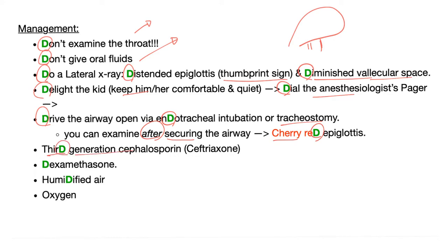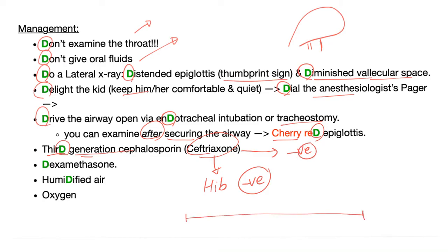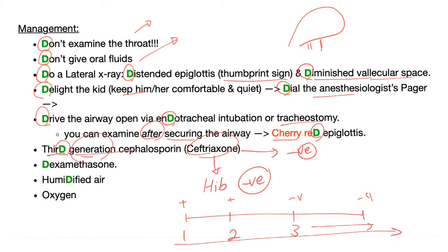Third generation cephalosporin is your antibiotic of choice because the causative organism is Haemophilus influenzae B, which happens to be gram negative. Third generation cephalosporins have great coverage for gram negatives. If you remember your cephalosporins: first generation is very gram positive; second generation is gram positive trying to be negative; third generation is gram negative; and fourth generation goes even more negative. So we go from positive to negative coverage, the higher the generation of the cephalosporin.